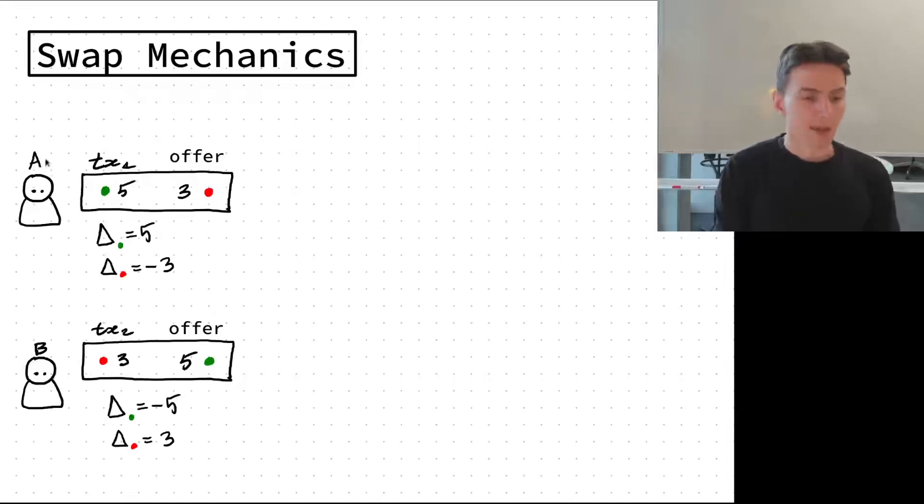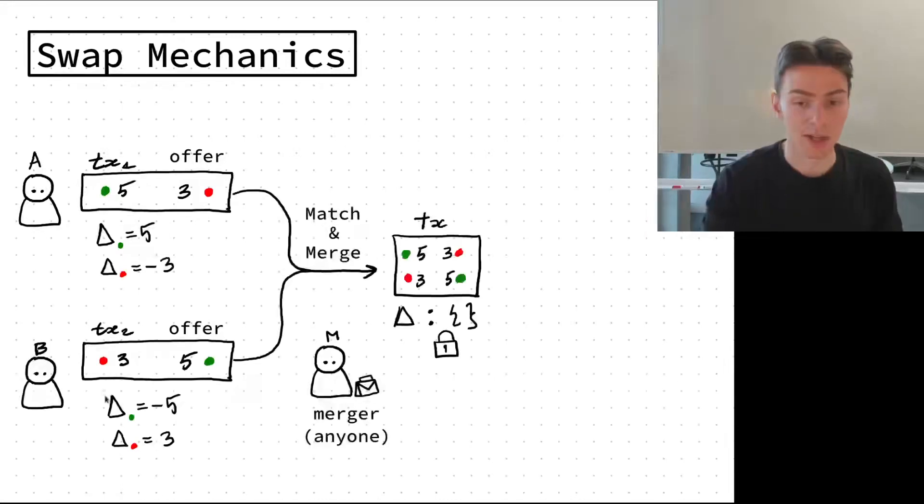How do we swap things? For example, A creates an offer, an unbalanced transaction from A to A. A wants to sell some green and receive some red so it creates a transaction with this imbalance public. B does the same but with different values. Then these two offers are sent to anyone, this merger M, and anyone who sees these two transactions can merge them together into one transaction. When you merge transactions you erase information about their imbalance.